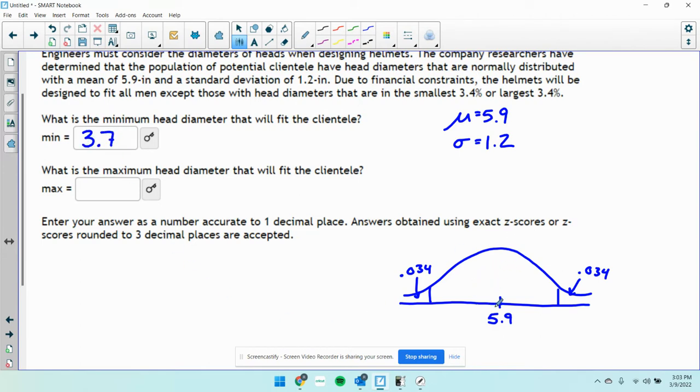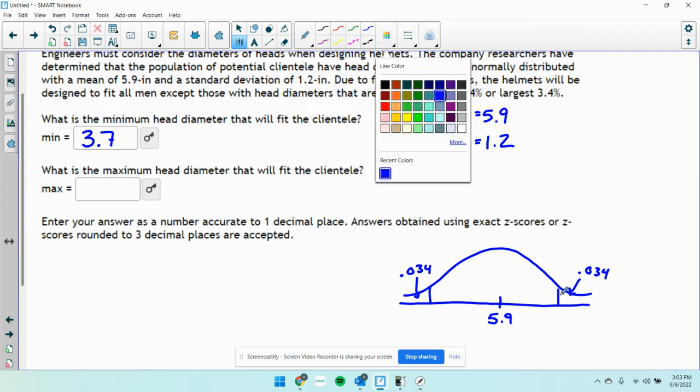Now you can either figure out what I subtracted to go from 5.9 to 3.7 and then add that, or you can just do it again and say I'm going to use the area to the left of this guy.